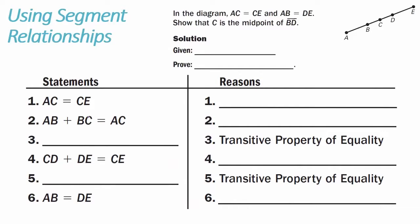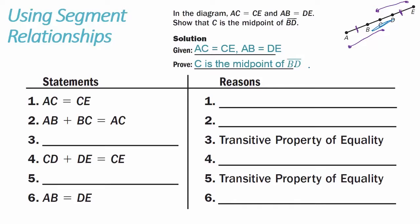Example three, using segment relationships. In the diagram, AC is congruent to CE, and AB equals DE. We are to prove that C is the midpoint of line segment BD. So given that AC equals CE and AB equals DE, we need to prove that C is the midpoint of line segment BD.